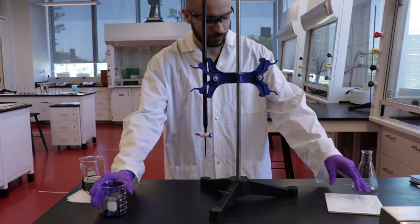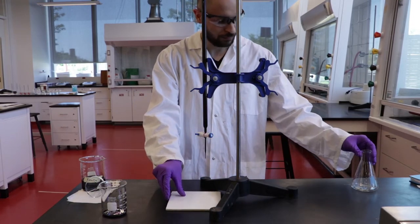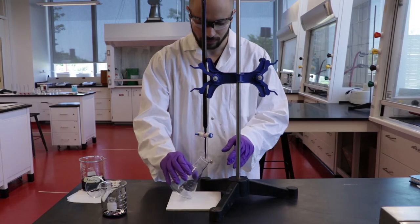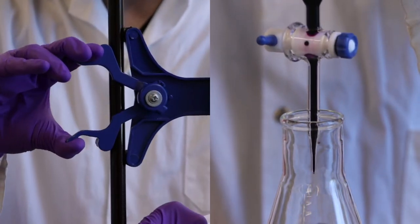A white tile or sheet of paper beneath your flask can help with identifying your endpoint. Adjust the burette so that the tip overlaps two to three centimeters with the flask into which you will dispense the solution.